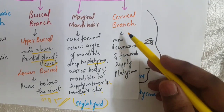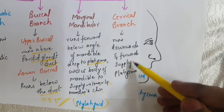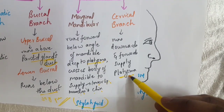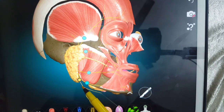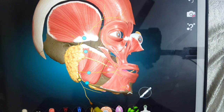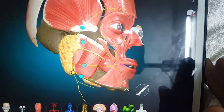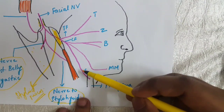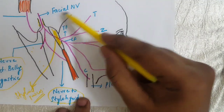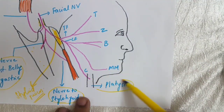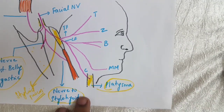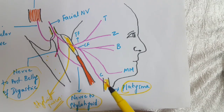The last branch is the cervical branch of the facial nerve. It runs downwards and forwards and supplies the platysma muscle, which is a muscle of facial expression. In the diagram, this is the cervical branch running downwards and forwards to supply the platysma muscle. In the next video we will be discussing facial nerve paralysis — that's all for today.